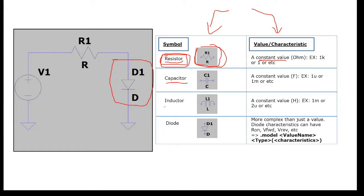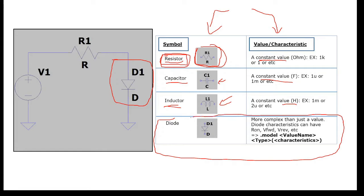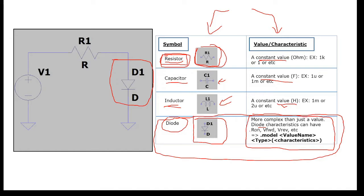Similarly, for simple components like a capacitor or inductor, they need only a symbol and a constant value. However, for the diode it will be a little bit more complicated. The concept is the same — the diode needs a symbol and its characteristics — but the diode's characteristics are more than just a single value. The diode characteristics can have many values, and each value has its own function.